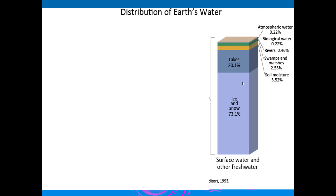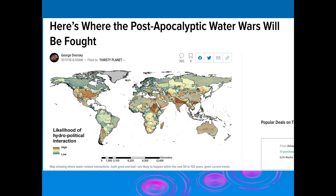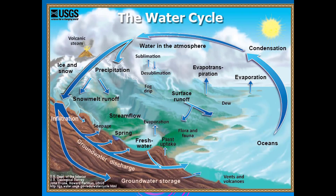There are definitely ways that we can do a better job. Only about 0.02% of the earth's water supply is available to us as liquid fresh water — that won't be on the exam but keep it in mind. On page 23 where it says 'here's where the post-apocalyptic water wars will be fought,' you can just cross that out — we do not need it.